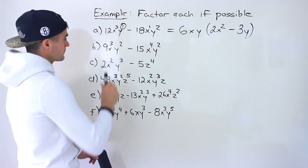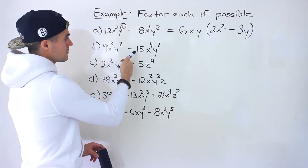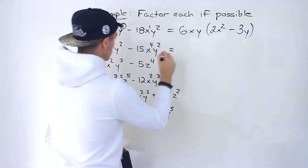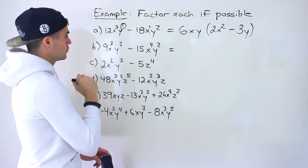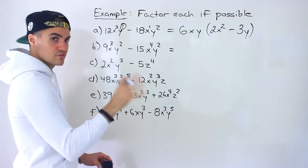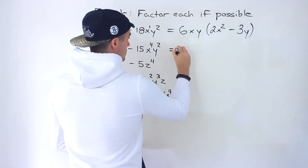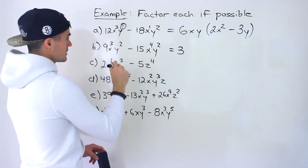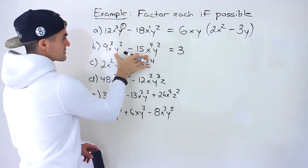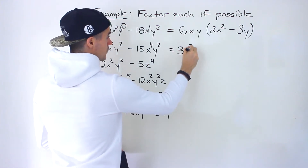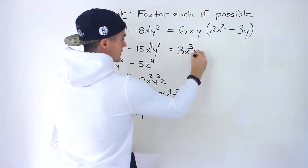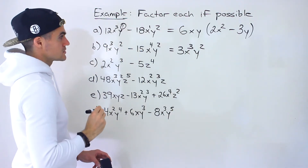Moving on to part B: 9x cubed y squared minus 15x to the 4 y squared. The greatest common factor between 9 and 15 is 3 — 9 divided by 3 is 3, and 15 divided by 3 is 5. Both expressions have x, and the lowest exponent is 3, so we take out x cubed. For y, both have y squared — same exponent — so we take out y squared.